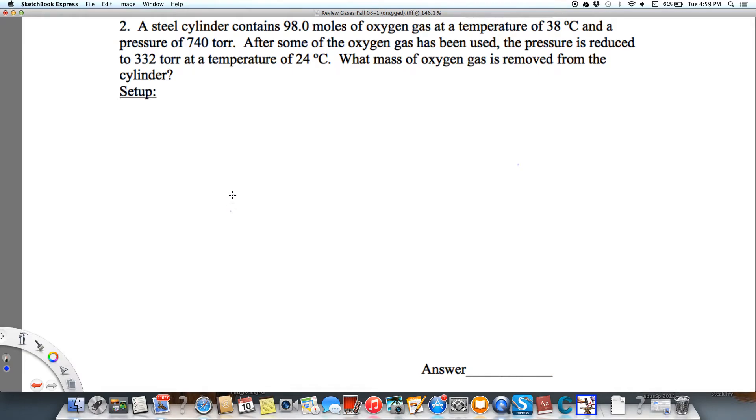A steel cylinder contains 98.0 moles of oxygen gas at a temperature of 38 degrees Celsius and a pressure of 740 torr. After some of the oxygen has been used, the pressure is reduced to 332 torr at a temperature of 24 degrees Celsius. What mass of oxygen has been removed?